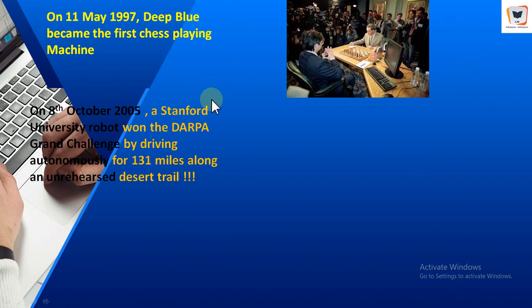On 8th October 2005, it was announced that a Stanford University robot had won the DARPA — the Defense Advanced Research Projects Agency of the USA — grand challenge by driving automatically for 131 miles along an unrehearsed desert trail.